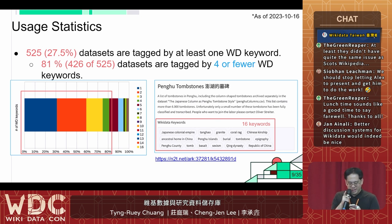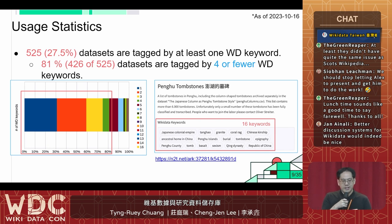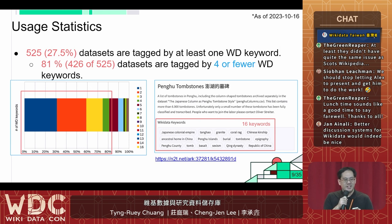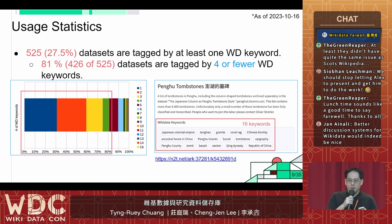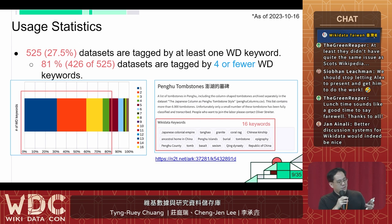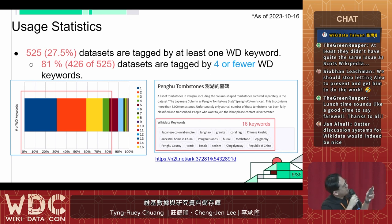接下來透過統計數字分享 Wikidata 關鍵字在 Deposita 裡的使用狀況。到今年 10 月為止，大概有 525 個資料集，就是不到三成（27.5%）有標註一個以上的 Wikidata 關鍵字。在這 27.5% 裡頭，八成以上的資料集都是標註四個或四個以下的關鍵字，這蠻符合大家一般論文的方式，因為我們是研究儲存庫，大家可能把它跟論文的關鍵字做連結。一般論文大概就是五個左右的關鍵字，也有例外——有一個資料集它標了 16 個 Wikidata 關鍵字。